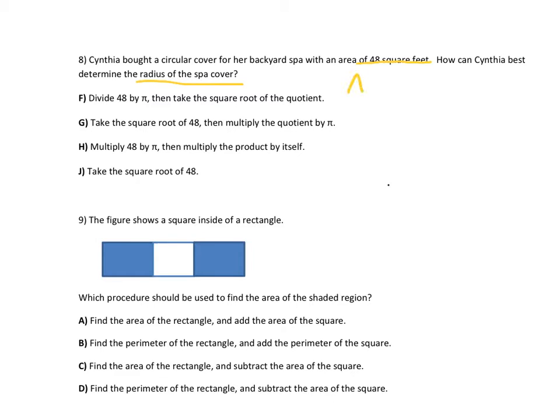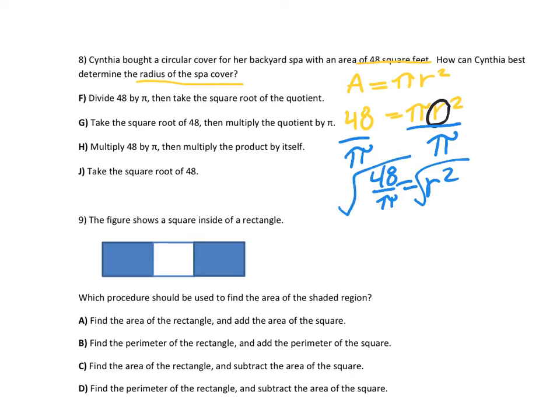We're going to work backwards. We know the area but we're looking for the radius. So if we fill in what we know, how can we solve for this specific r right here? We would have to work backwards. Pi and r squared are multiplying, so the opposite of multiply is to divide both sides by pi. So the first step is divide by pi, and you would get r squared equals 48 divided by pi. And then you would take the square root of each side. So the option that does that is answer F.